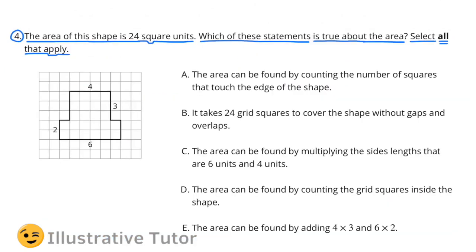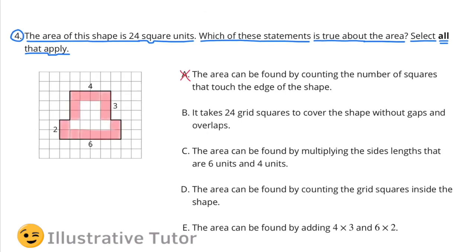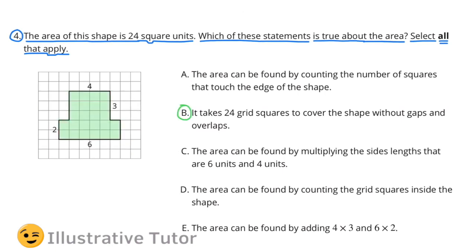Number 4. The area of this shape is 24 square units. Which of these statements is true about the area? Select all that apply. A does not apply — this is more like finding the perimeter, not the area. B does apply: it takes 24 grid squares to cover the shape without gaps and overlaps. That is the area.